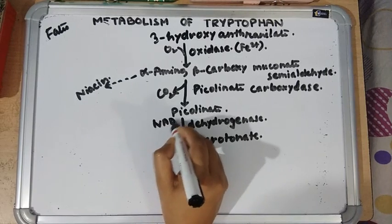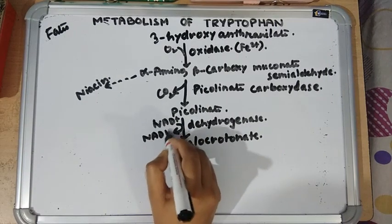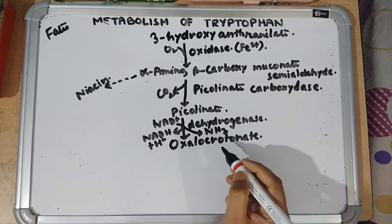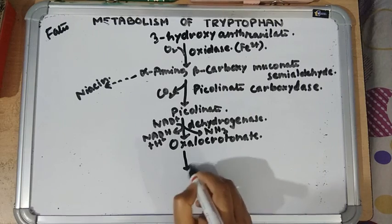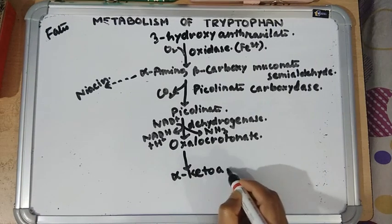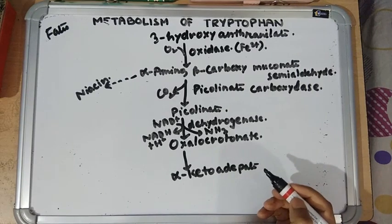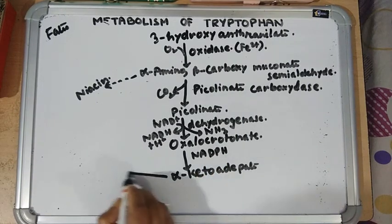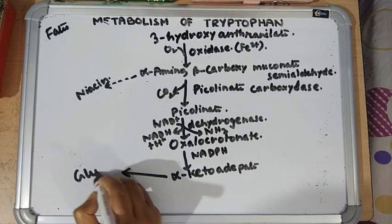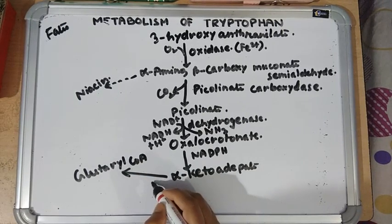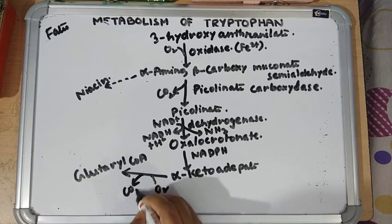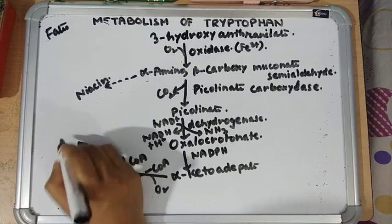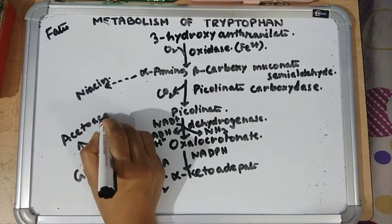NAD is required as coenzyme, followed by deamination. Then oxaloprotenate is converted into alpha-ketoadipate, where NADPH is required.